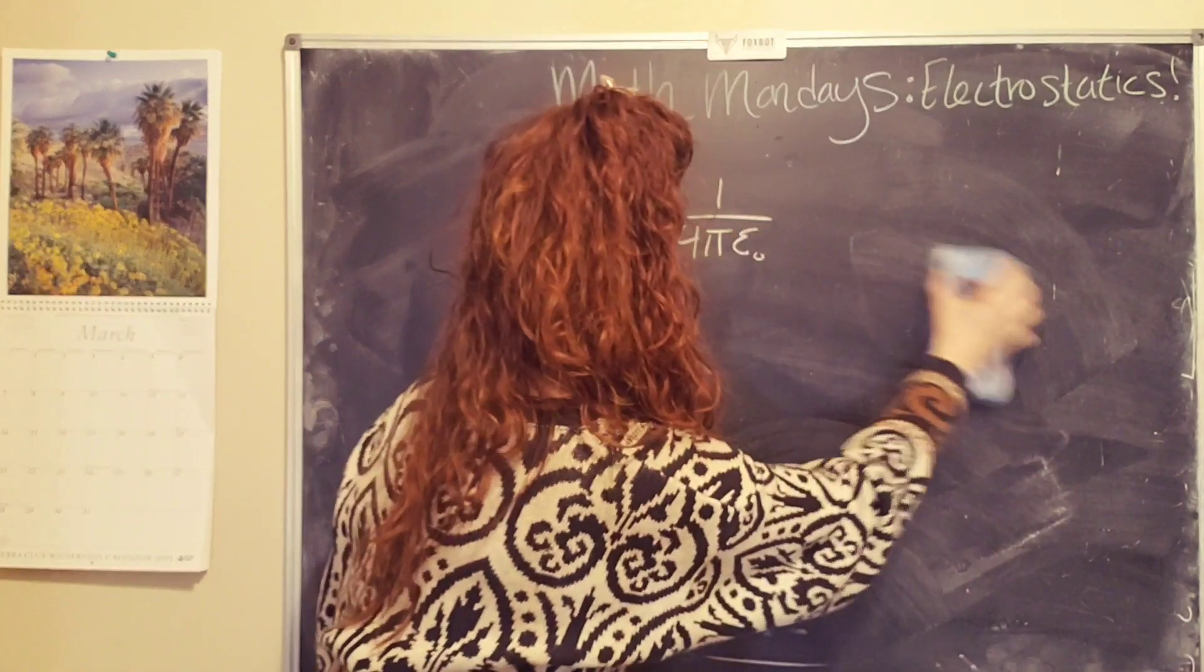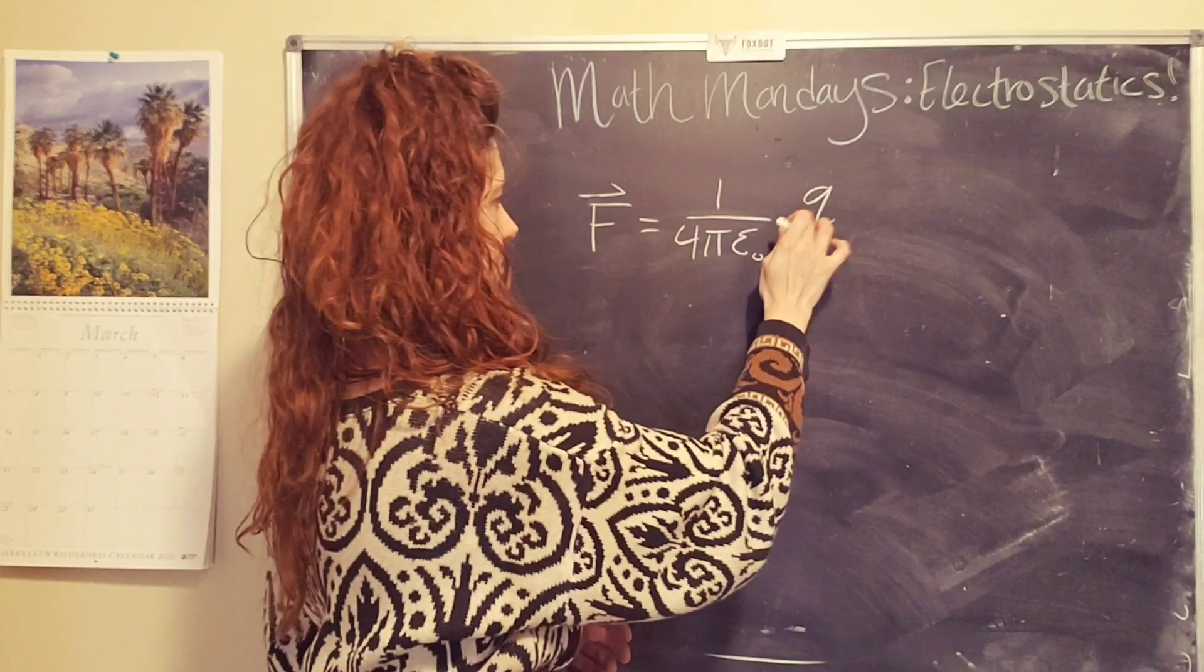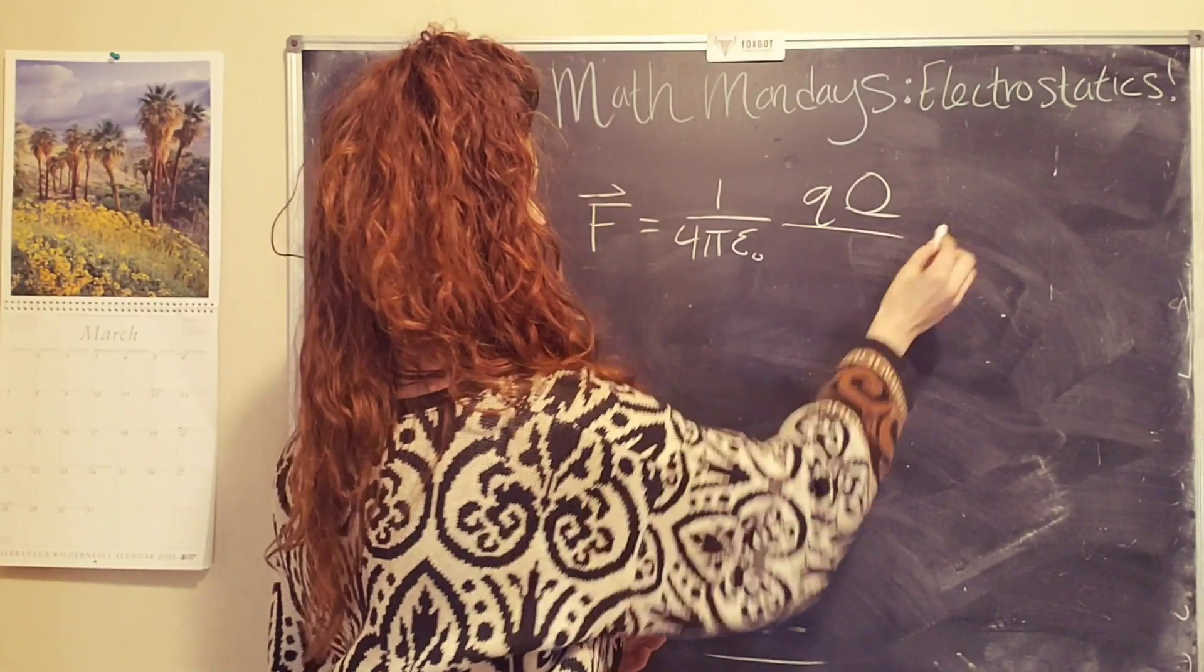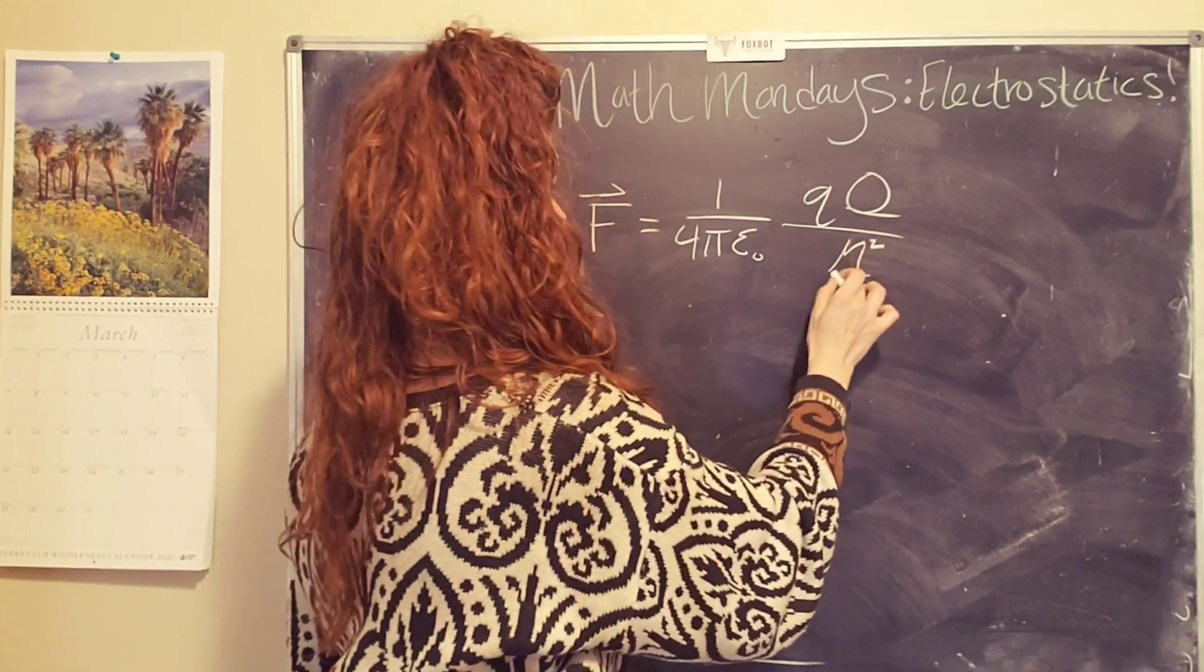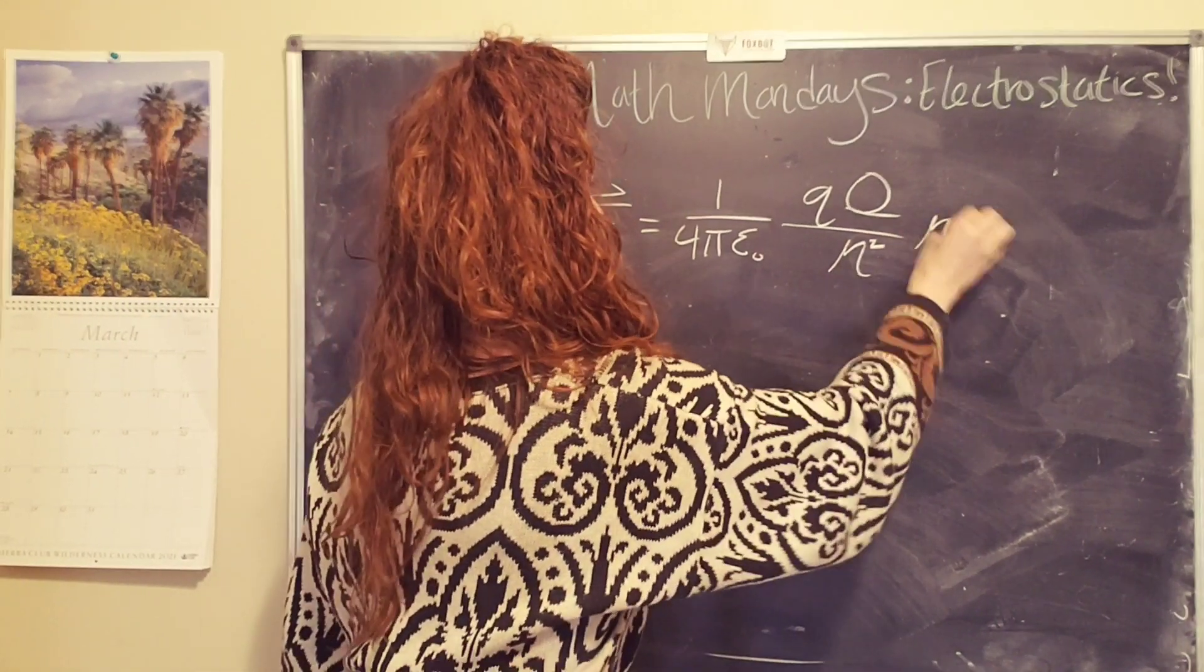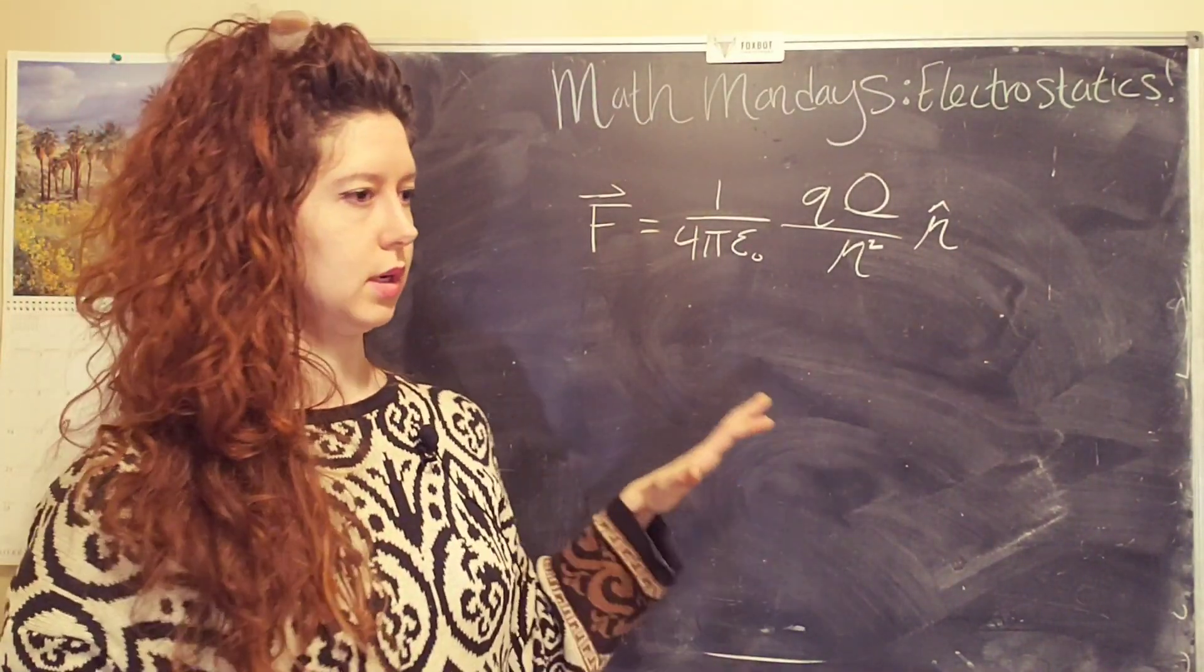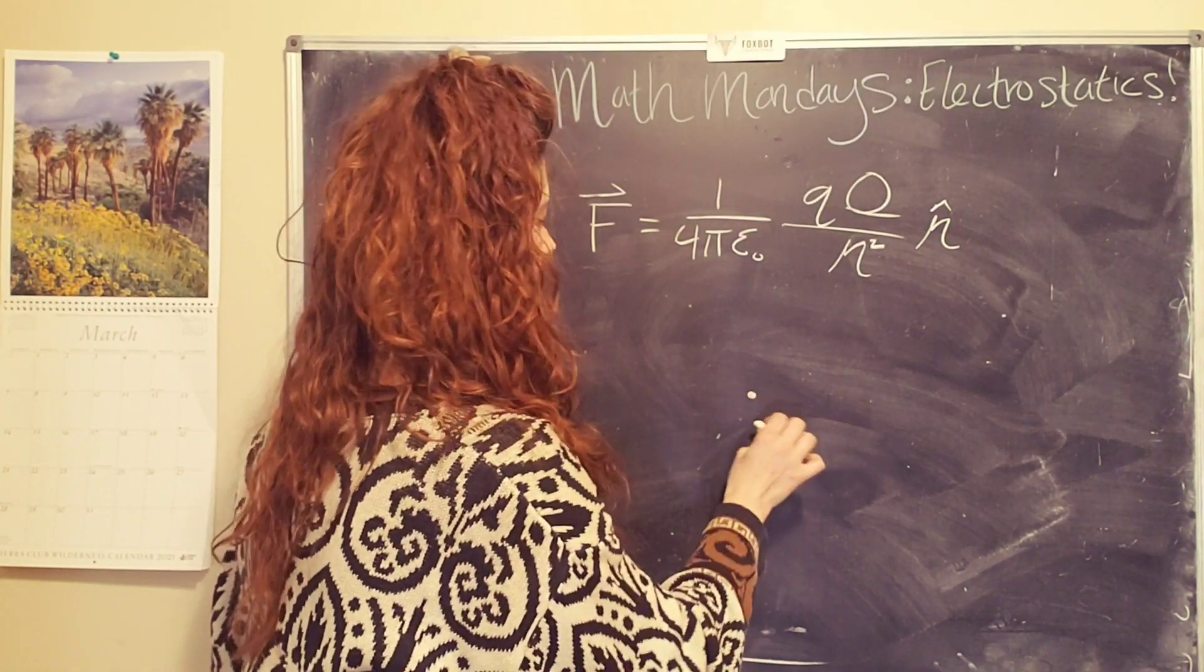So Coulomb's law is one over four pi epsilon naught. This test charge is kind of hanging out there. Times our source charge, the size of our source charge times the size of our test charge divided by the distance between them squared. And it points in the direction of the two charges. Well, let me draw a picture because of like, wait, what did you just say?